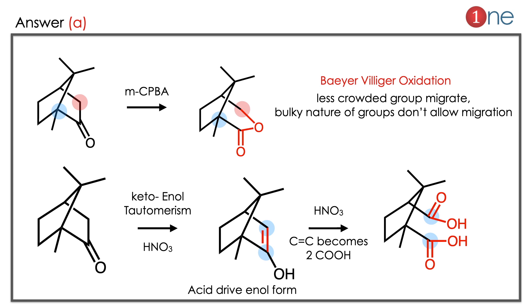Key learnings: one, in Baeyer-Villiger oxidation, bulky groups normally do not migrate; two, in acidic medium the enol form is stable, and it is then oxidized by nitric acid.